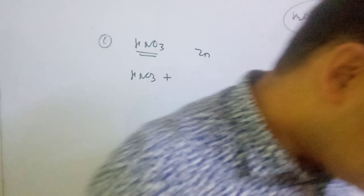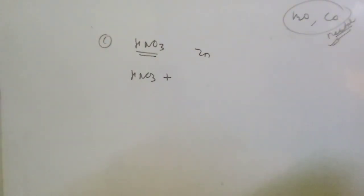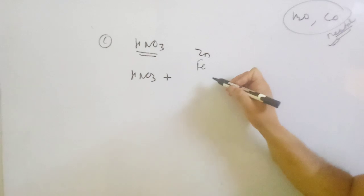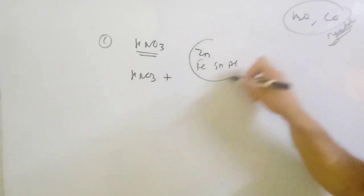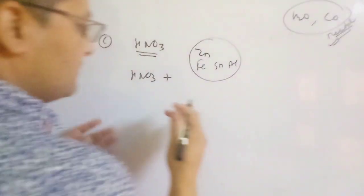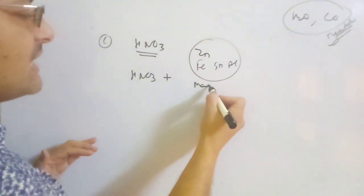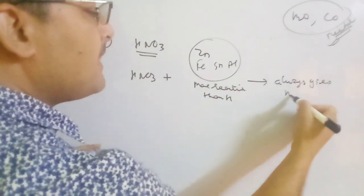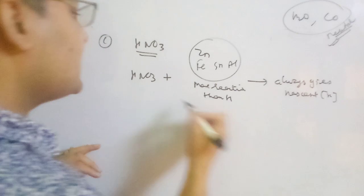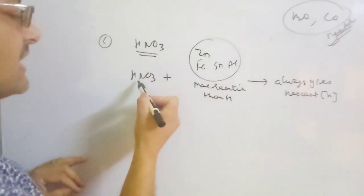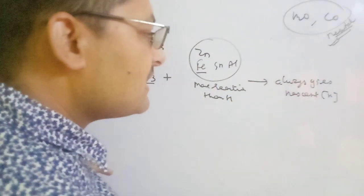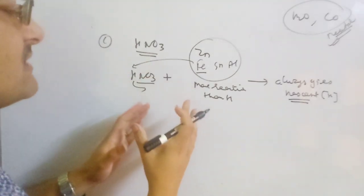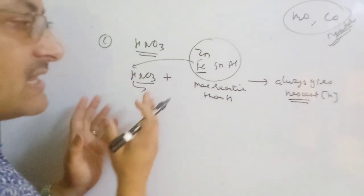these metals which are more reactive than hydrogen: when nitric acid reacts with them, they always give nascent hydrogen. So when HNO₃ reacts with zinc, nascent hydrogen is produced. When HNO₃ reacts with iron, nascent hydrogen is produced, because these metals can easily displace the hydrogen from HNO₃. When more reactive metal reacts with nitric acid, there is formation of nascent hydrogen.